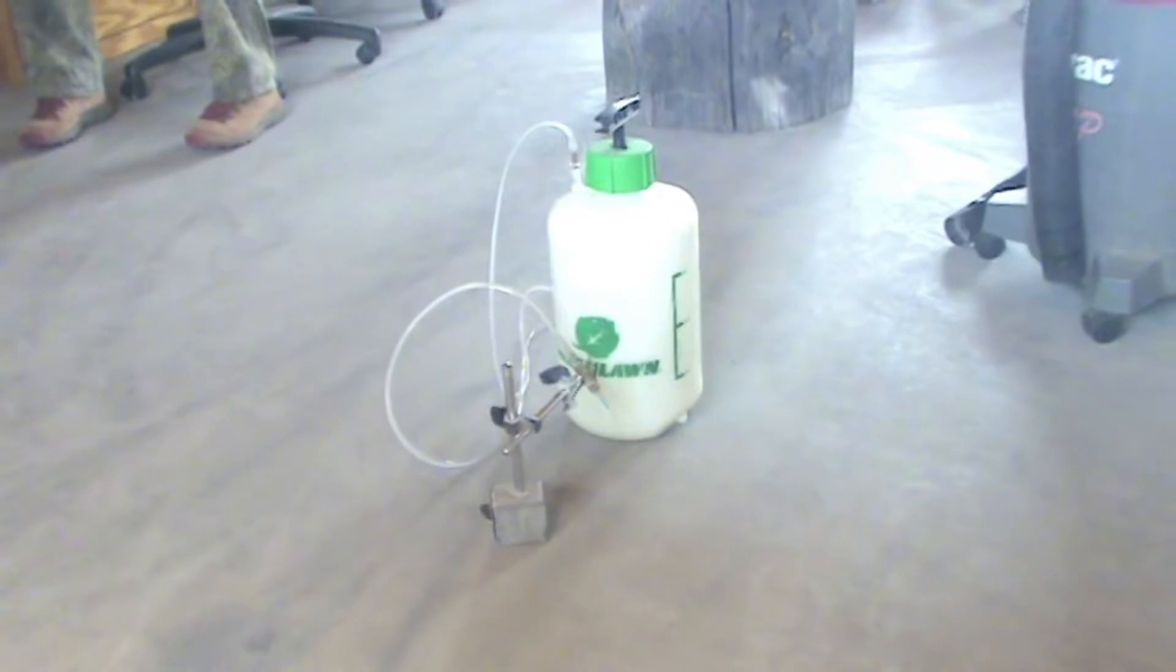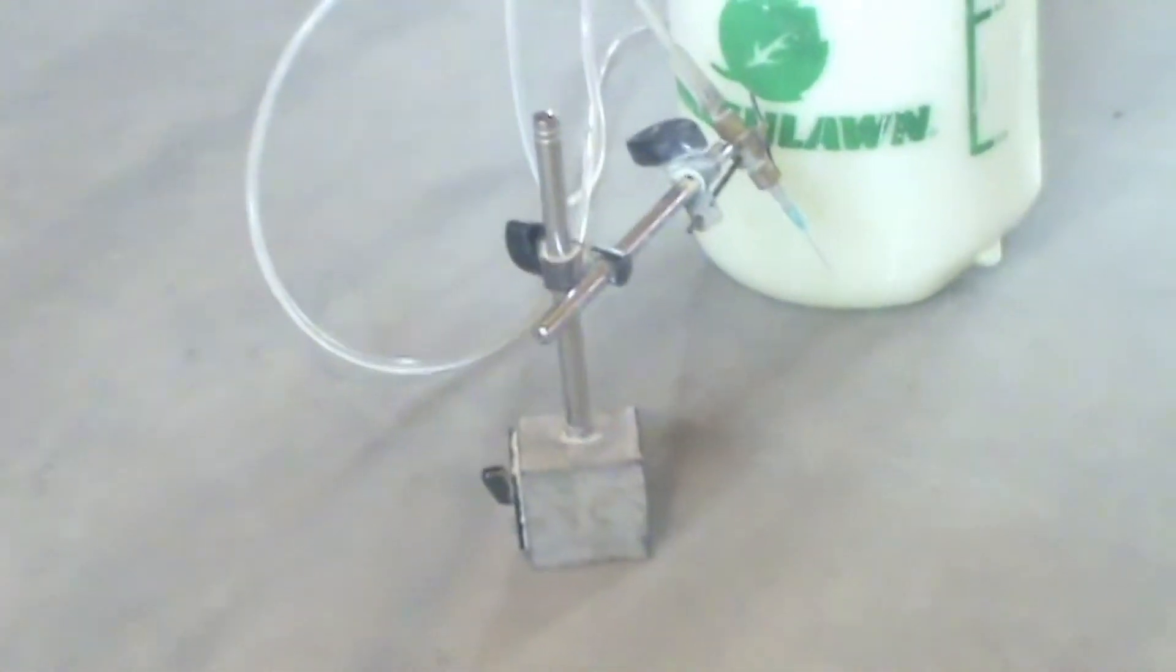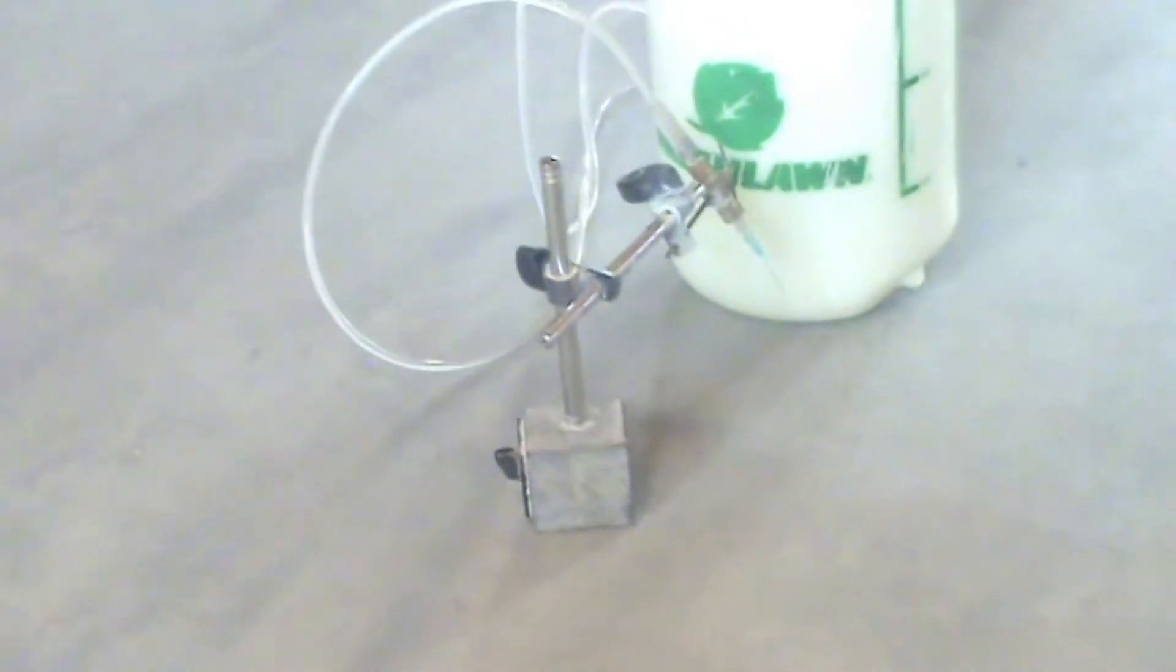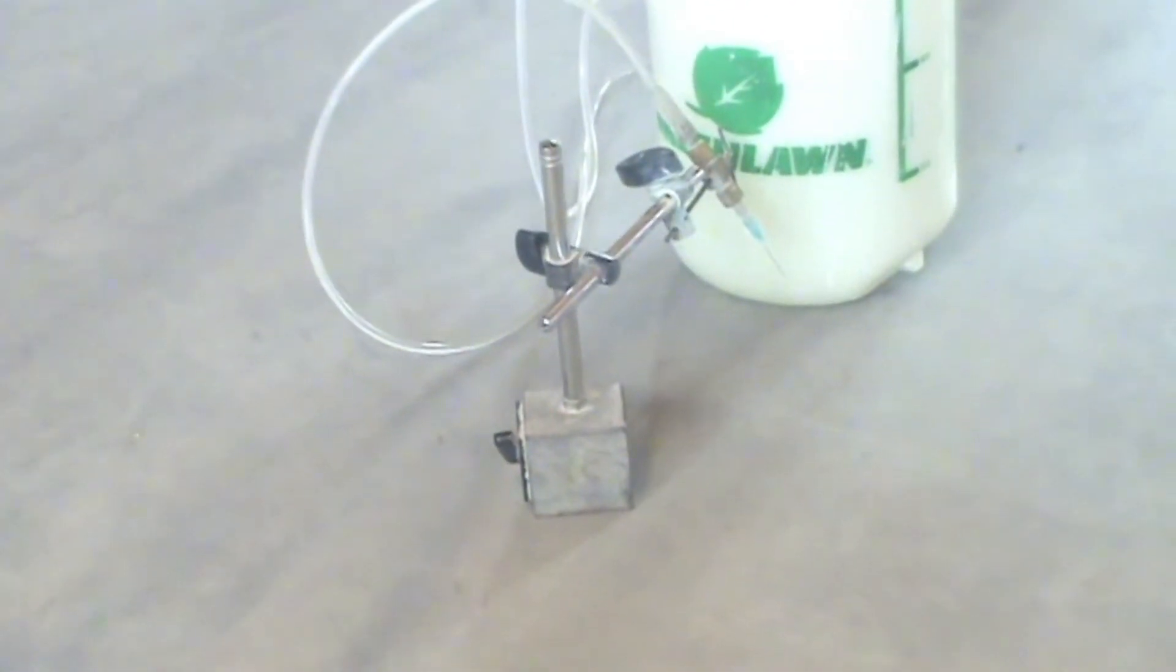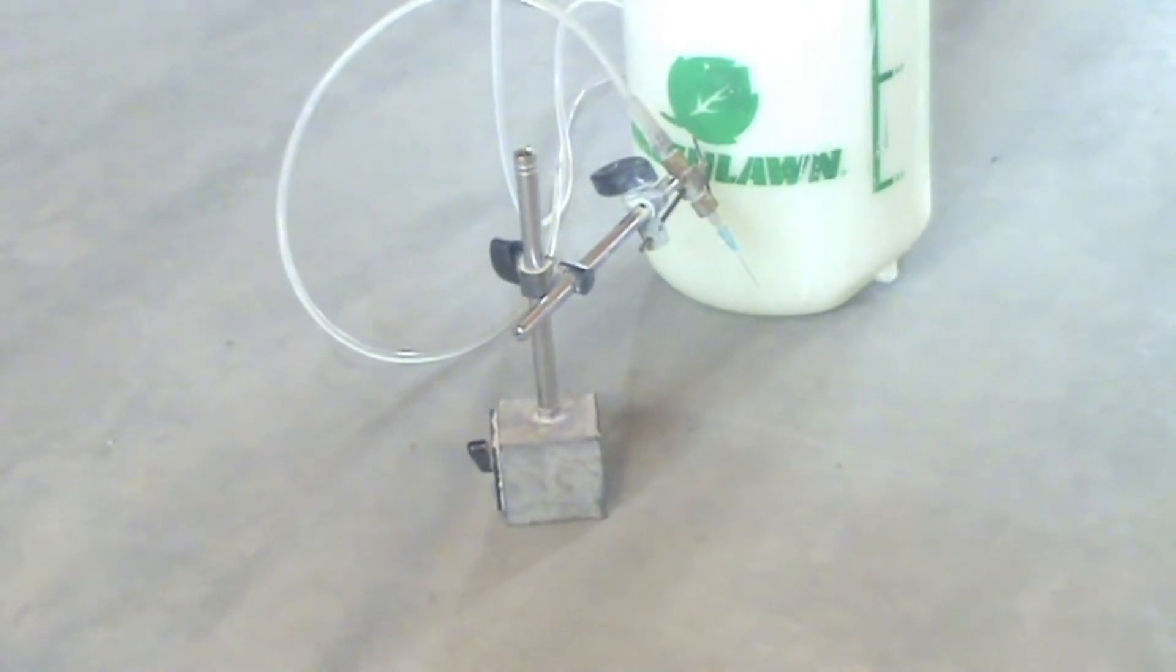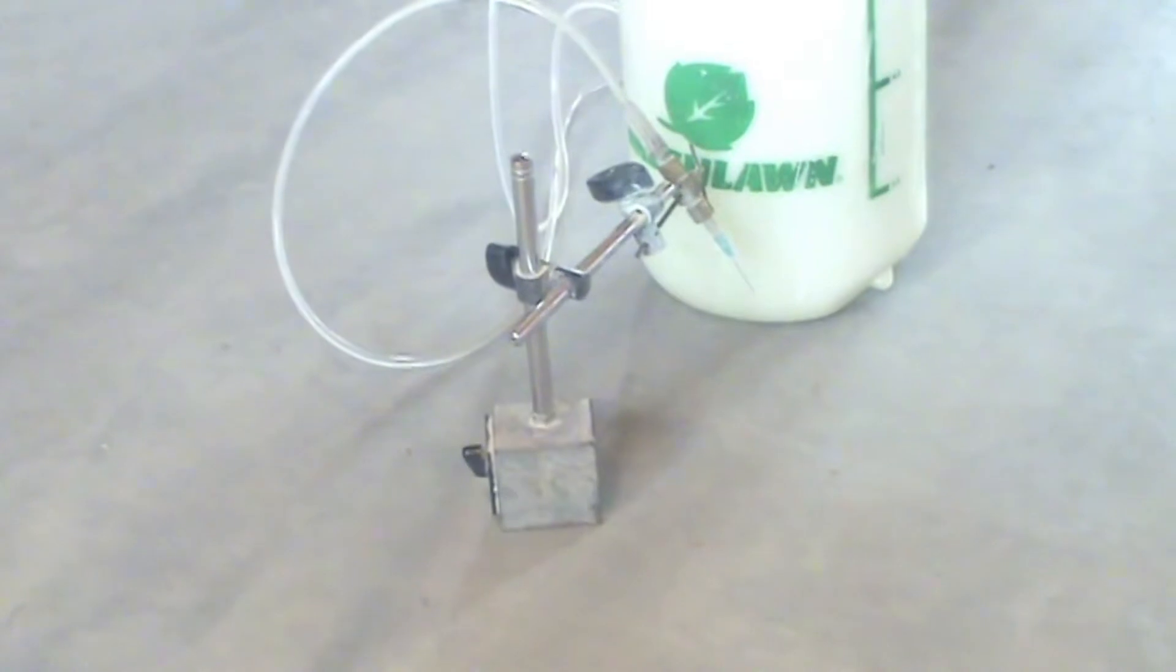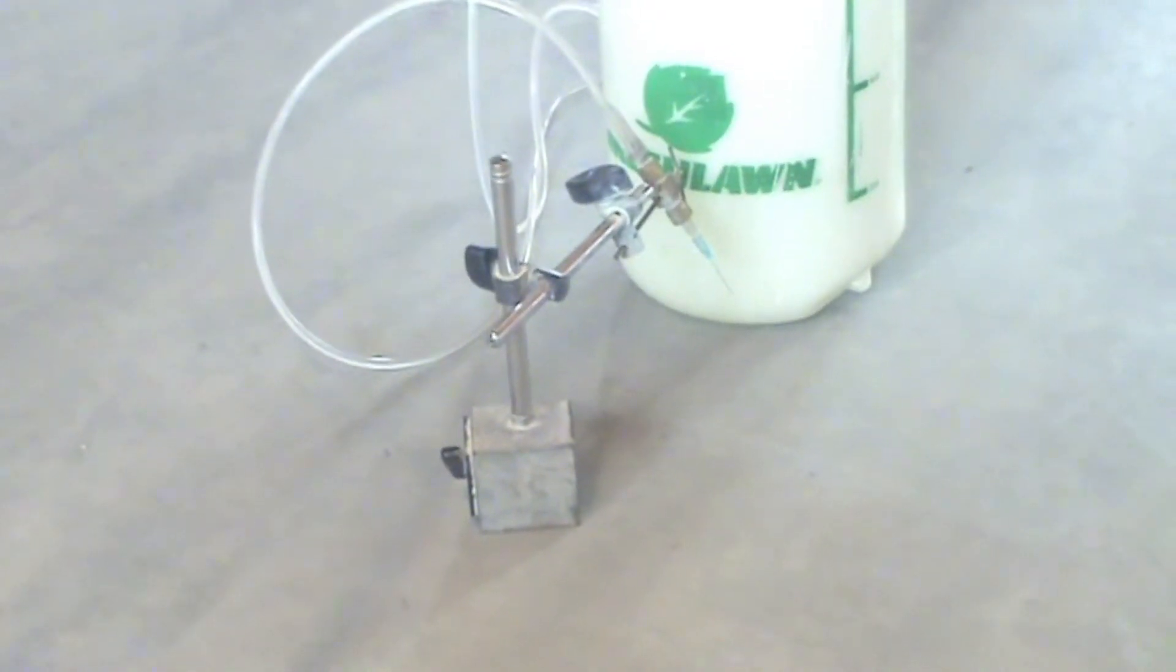I'm going to go ahead and zoom in on this piece. That is called a magnetic base. You can buy them off of eBay or pretty much anywhere on the internet. It's a machinist tool called a magnetic base.